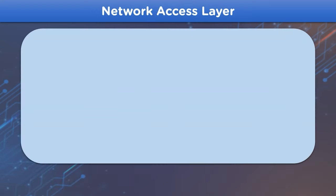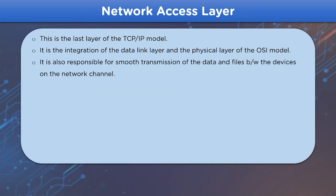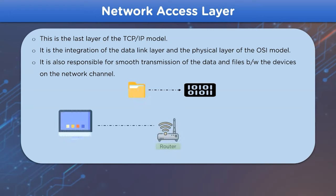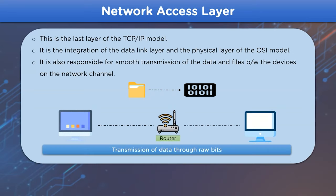Finally, we have the network access layer. This layer is a combination of the data link layer and physical layer from the OSI model, and is responsible for sending and receiving data in raw bits. The raw bits are transferred from the sender to the receiver in the format of binary digits — zeros and ones.